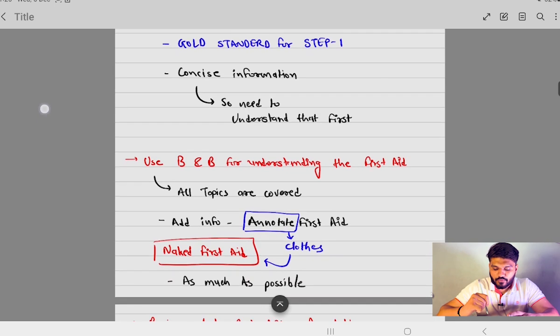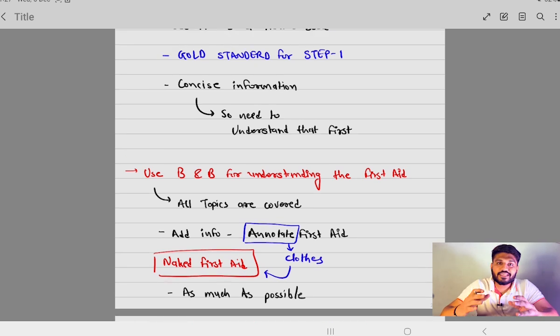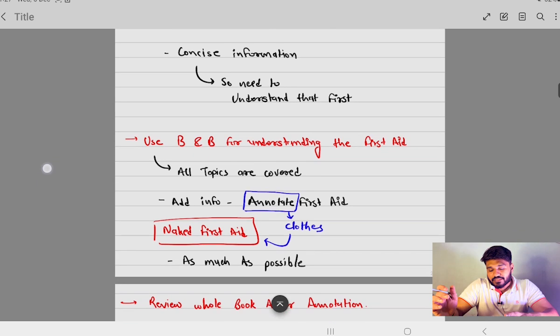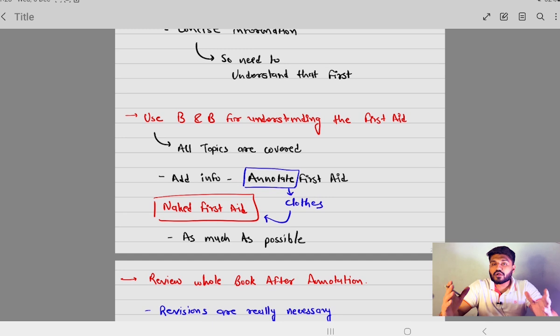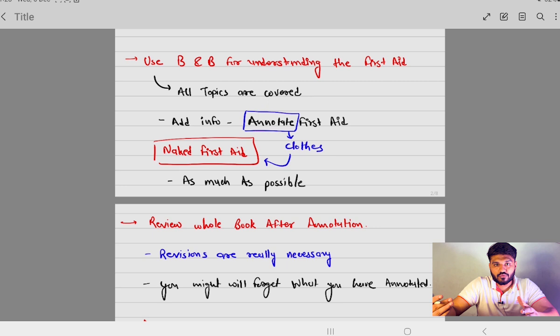Those additional info you can annotate in the First Aid because without annotation your book will look like a naked book. Annotation is First Aid's cloth and you need to make it look really nice. You need to annotate First Aid as much as possible. Review whole book after annotation. First thing is that you are annotating your First Aid book and second thing is that you are reviewing your annotation with the First Aid book. This will make you understand First Aid book really easily.